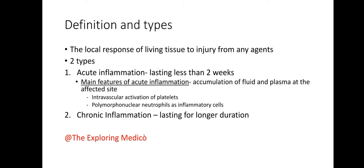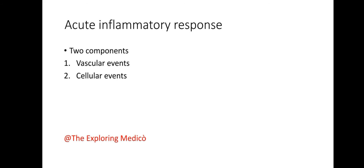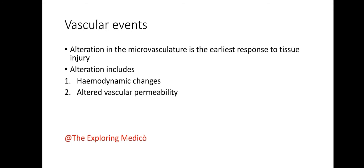Chronic inflammation lasts for a longer duration. The signs of inflammation are rubor, tumor, color, dolor, and loss of function. The acute inflammatory response has two components: vascular events and cellular events.